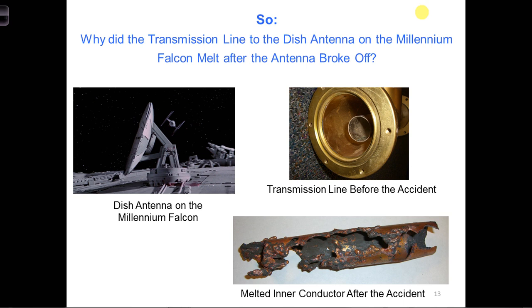Also describe what a negative traveling phasor represents. 3. Describe how we can plot both the positive and negative phasors in a complex plane to get an understanding of how the positive and negative traveling waves interact with each other, cause standing waves, and impact the voltage and current along a transmission line, depending on what the load is at the end of the transmission line. And 4. Describe why the transmission line melted on the Millennium Falcon when the antenna broke off.